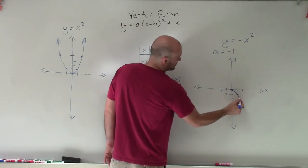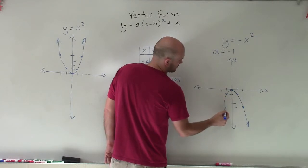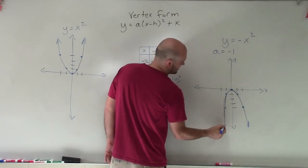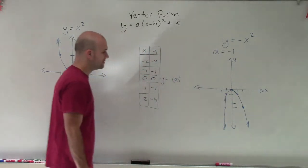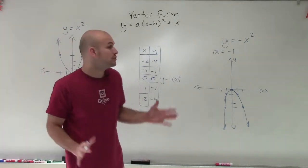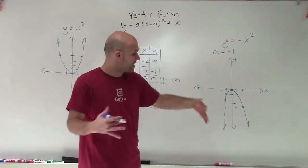So now, you can see my graph, and it's going to go down in the negative direction. That's true for when all my values, when a equals negative, it's going to go downward.